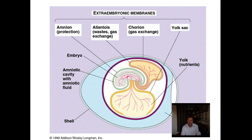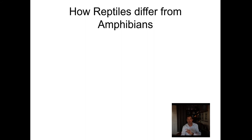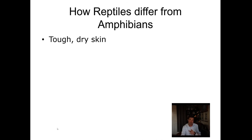This is what the basic amniotic egg looks like. If you look at a diagram of a chicken egg, that's a type of amniotic egg and probably the best example you're most familiar with. When we talk about reptiles, how do reptiles differ from amphibians? They don't have moist, wet skin — rather it is tough and generally very dry skin.